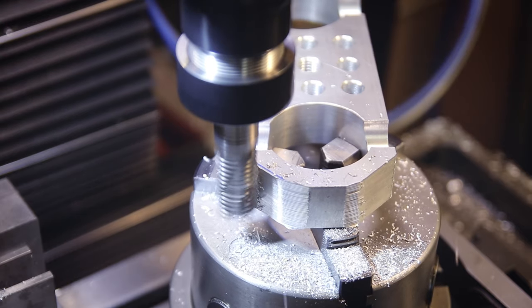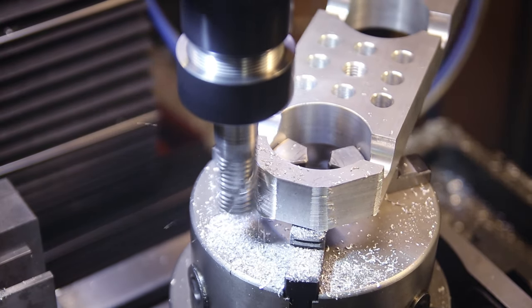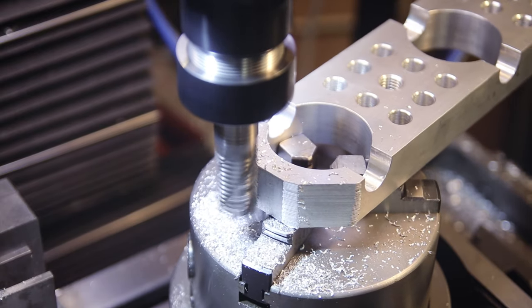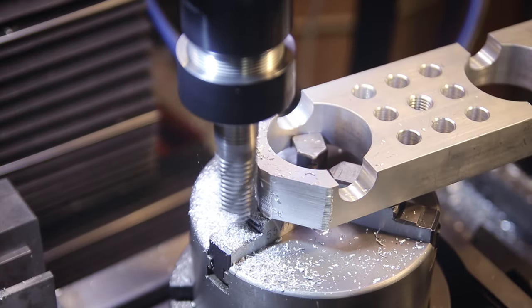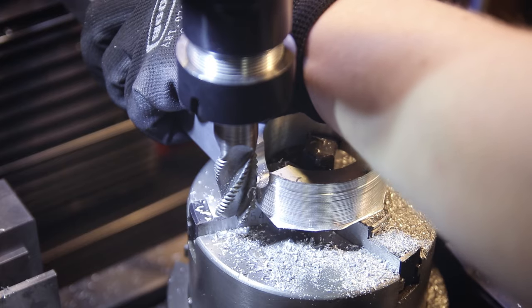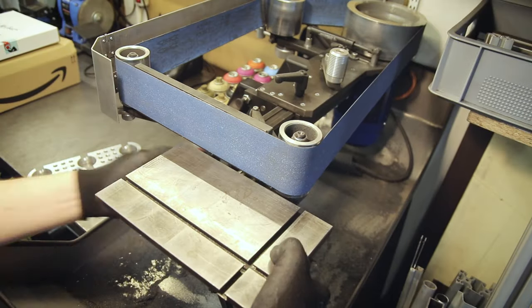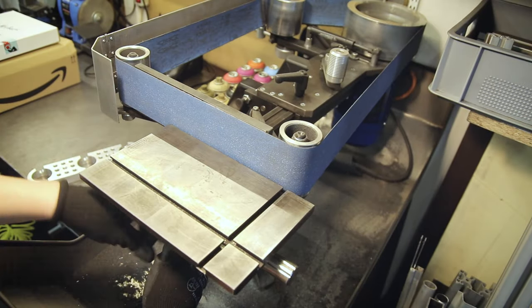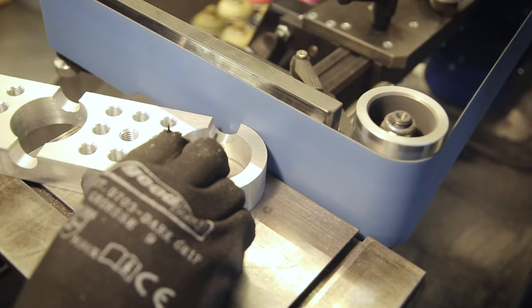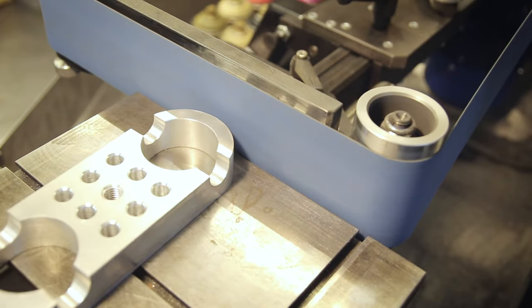You can see I switched to a roughing end mill here, these do leave a pretty ugly finish but they can remove a lot of material in one cut and I'm actually going to clean up the surface just on the belt grinder anyway. I'm using a fairly fine belt here and also a light touch so I'm not really removing much material just basically removing the marks left by the end mill.